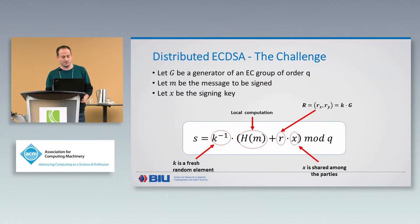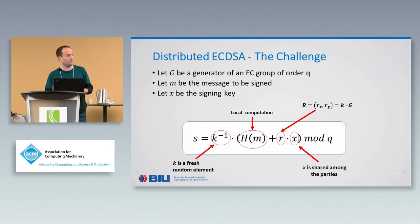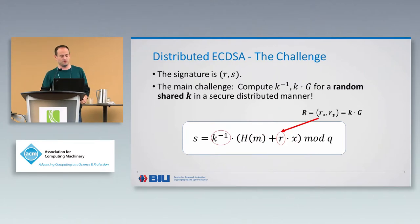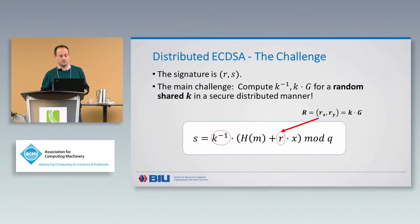As you can see from this expression, in the distributed setting the value of K must also be kept secret. If the parties know K and then see the signature, they will be able to compute X from the signature — i.e., recover the signing key. So K must also be kept secret. The challenge of computing ECDSA in a distributed manner is therefore to compute both the inverse of K and K times G for some random K that is kept secret during the execution.